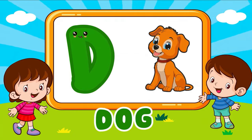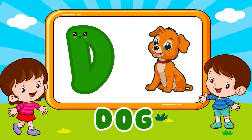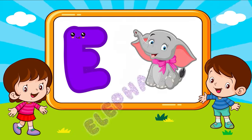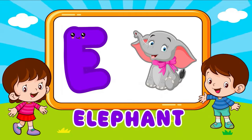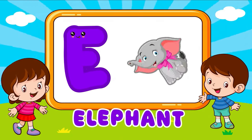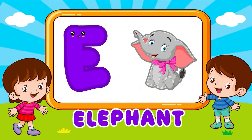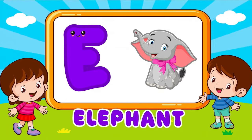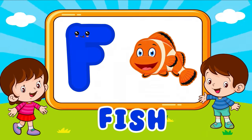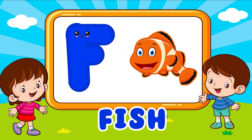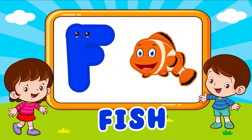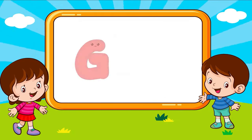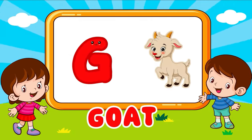D is for dog. D, dog, D is for dog. D, dog. E is for elephant. E, elephant, E is for elephant. E, E. F is for fish. F, fish, F is for fish. F, F. G is for goat. G, goat, G is for goat. G, G.